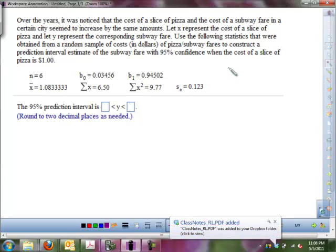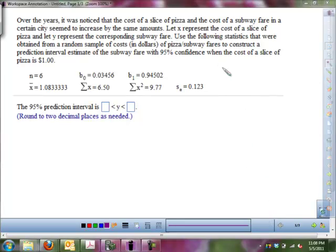What you would have to imagine is that we had a table of X and Y where X is the cost of pizza and Y is the subway. And with this data that was given, they came up with these statistics. So we had six samples.